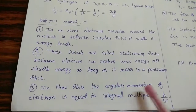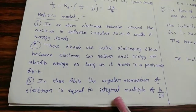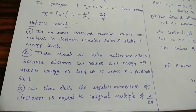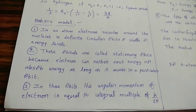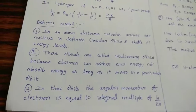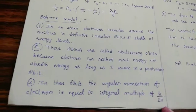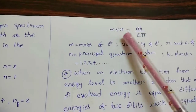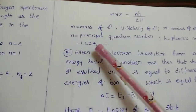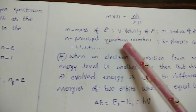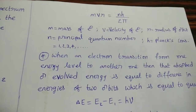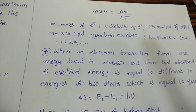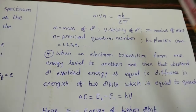In these orbits, the angular momentum of the electron is equal to an integral multiple of h/2π. Since electrons follow circular paths, they have angular momentum, and their values are integral multiples of h/2π: mvr = nh/2π. Here n takes values 1, 2, 3, 4... — n is called the principal quantum number, which will be covered in the next topic along with other quantum numbers.